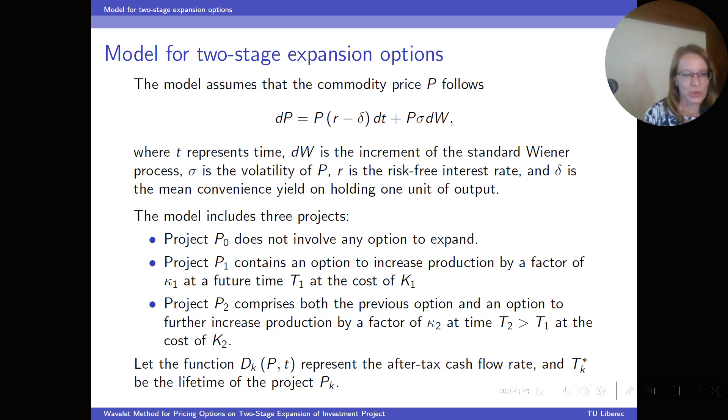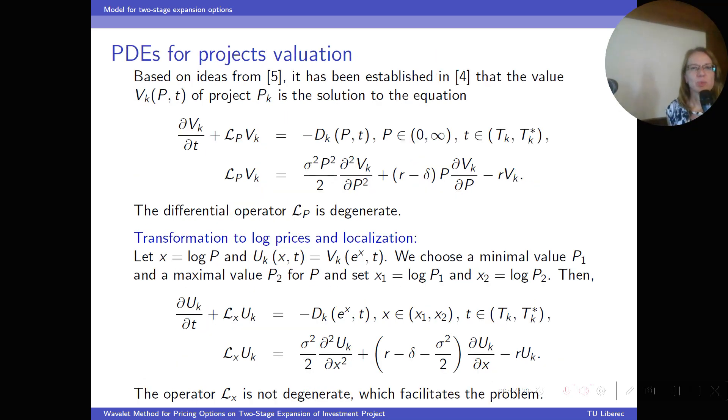D_k represents the after-tax cash flow rate and T_k star is the lifetime of the project. It has been established in the mathematical literature that the value of the option of the project is represented by this differential equation. However, here the differential operator is degenerate, which is a complication. Therefore we transform the equation to logarithmic prices and localize it. After these adjustments, the differential operator is no longer degenerate, which greatly facilitates the problem. For example, we can use the standard Sobolev spaces and not the weighted Sobolev spaces.